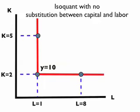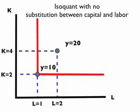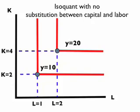The isoquant for this particular type of technology is depicted by the red line — the case when there is no substitution between capital and labor. It must be used in this proportion, two to one. So if we wanted to increase output, we would have to increase both capital and labor — for example, to four units of capital and two units of labor. Because it's a constant returns-to-scale technology, if you double the inputs, it will double the output to 20.